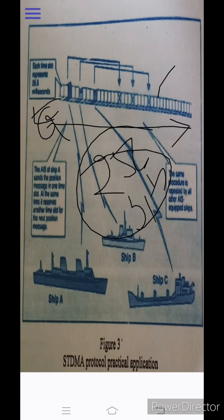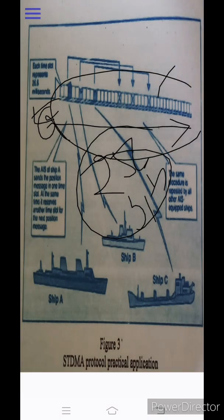The time slots are decided such that each cell or slot represents a time interval. One slot carries 267 bytes of data and that cell is transmitted in 26.67 milliseconds. The total data transferred per second is calculated using the bit rate. This is how STDMA works in practice.